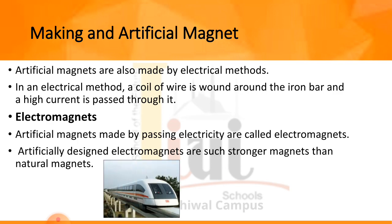Electromagnets can be used in many places. If you look at day-to-day appliances — on page 149 of your book — you will see the electromagnetic train. This train uses electromagnets for movement and stability, and they are used in many places around the world.